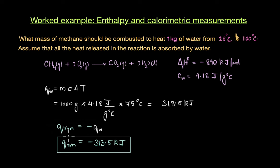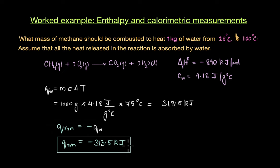The heat released by the reaction should be the negative of the heat absorbed by water, because we are assuming that all the heat released in this reaction is absorbed completely by water. As a result, we can write Q_reaction = −Q_water, which is nothing but −313.5 kJ.